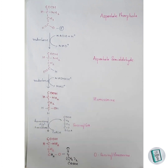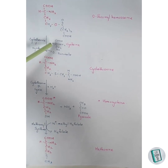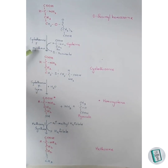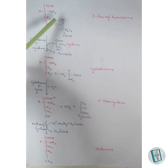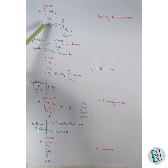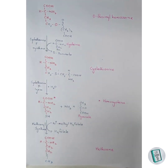In the next reaction, O-succinyl homoserine reacts with cysteine in the presence of cystathionine gamma-synthase enzyme, resulting in the formation of cystathionine. The O-succinate group is removed, and cysteine joins through its sulfur group to form cystathionine.